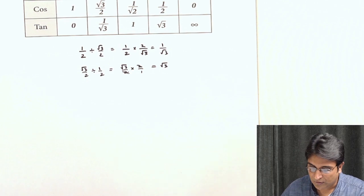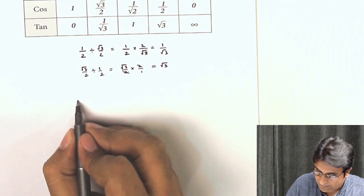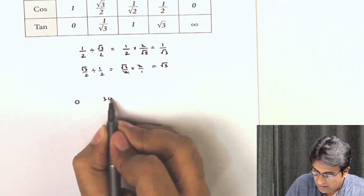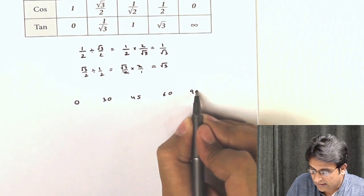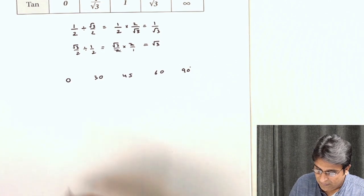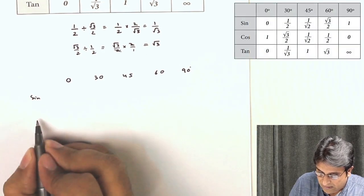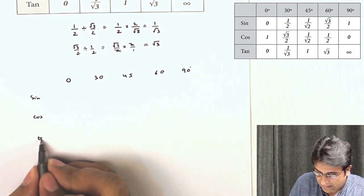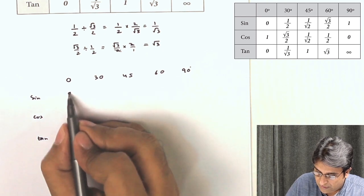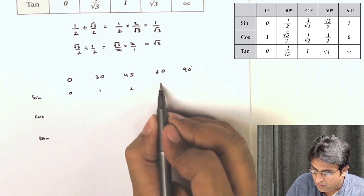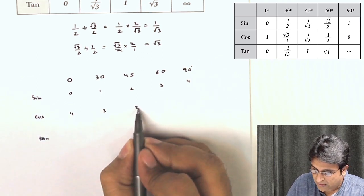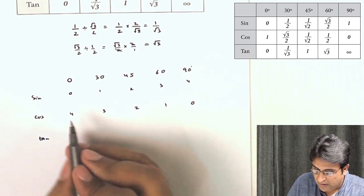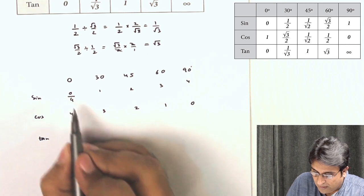So one trick I'll tell you which is very famous. So you've got 0, 30, 45, 60, 90, and you write that, and of course your sine, cos, tan. Now what you do is you write 0, 1, 2, 3, 4 here. You write reversed: 4, 3, 2, 1, 0.